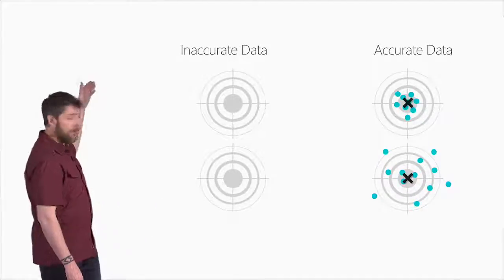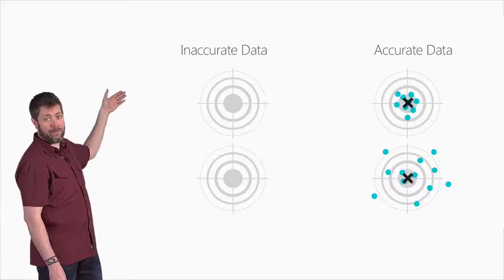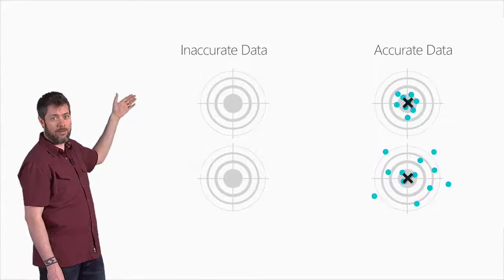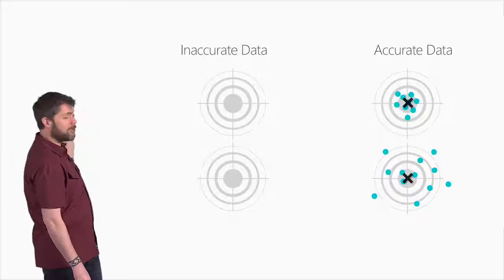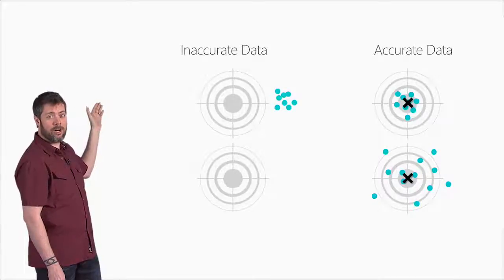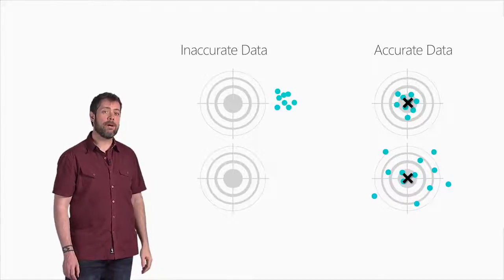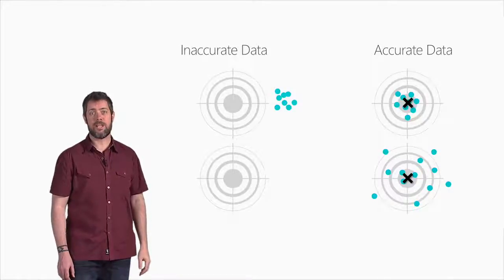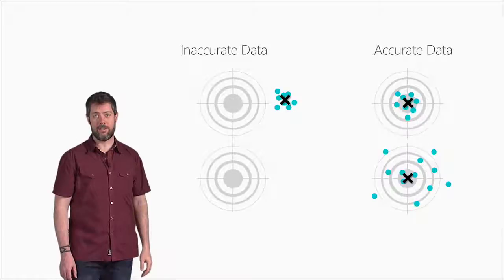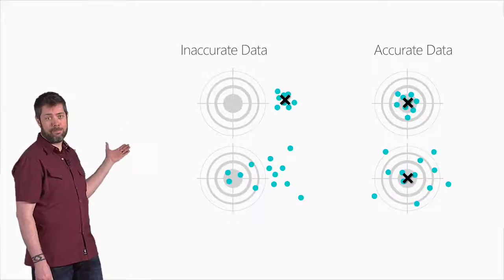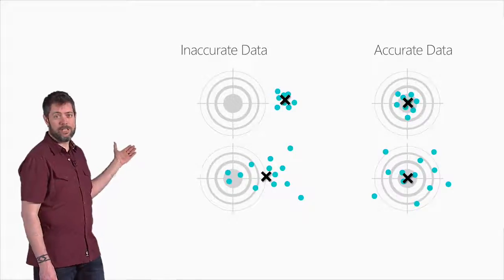The target in the upper right is both accurate and precise. Now look at the upper left target. Here our arrows hit very close together, a tight grouping. They're precise, but they're inaccurate because the center is way off the bullseye. And of course the arrows in the bottom left target are both inaccurate and imprecise. This archer needs a bit more practice.